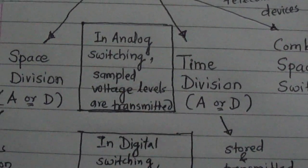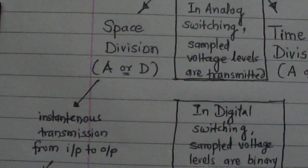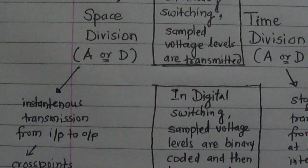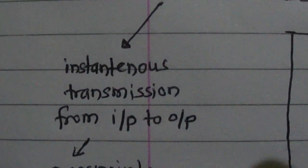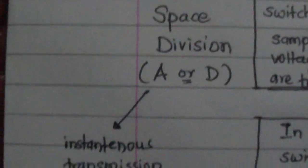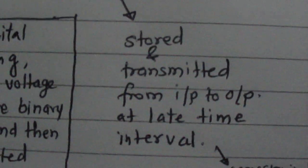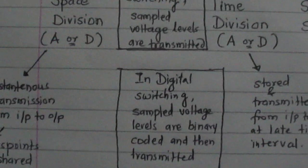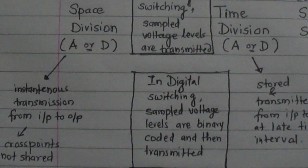Now we'll see the basics of space division switching. In space division switching, there is instantaneous transmission of data from input to output — at the same time, data is transmitted from input to output. In time division switching, data is first stored and then transmitted from input to output at a later time interval.